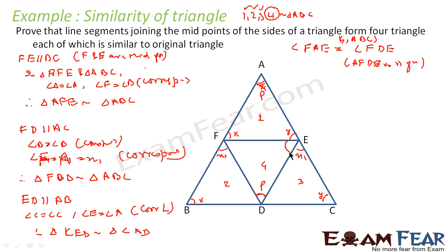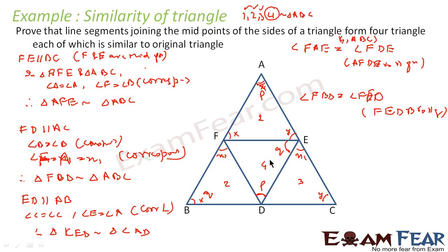Similarly, if we look at parallelogram FEBD, we see that angle B equals angle FDE — let's call this angle Q. So Q equals Q. And if we take this angle as R, this angle also becomes R, because FECD is a parallelogram. So in parallelogram FECD, angle ECD equals angle DFE — that is angle R equals angle R in triangle DEF.